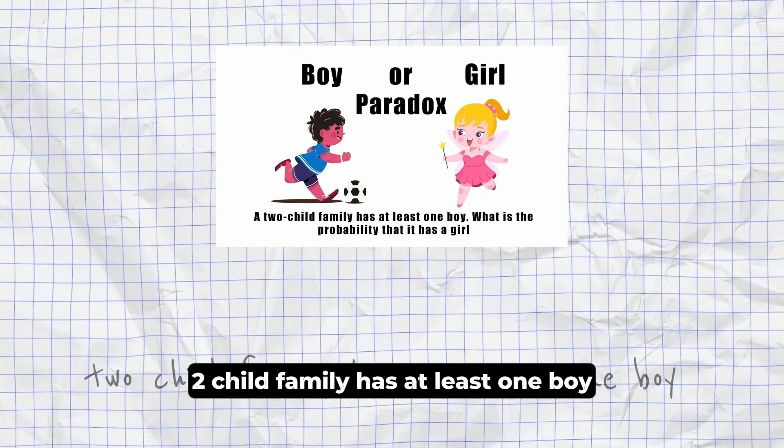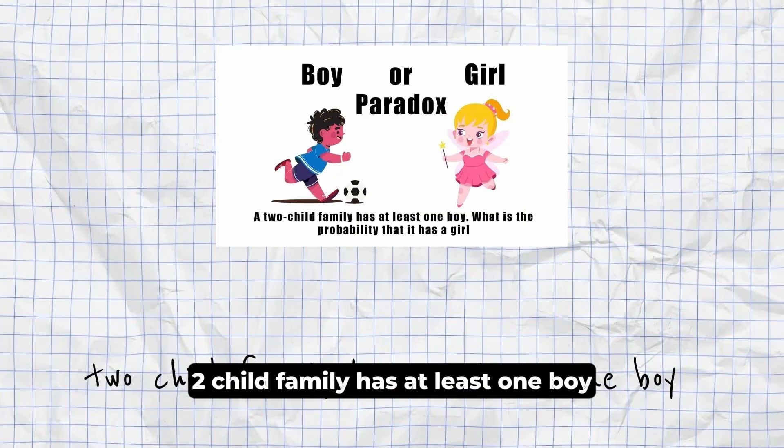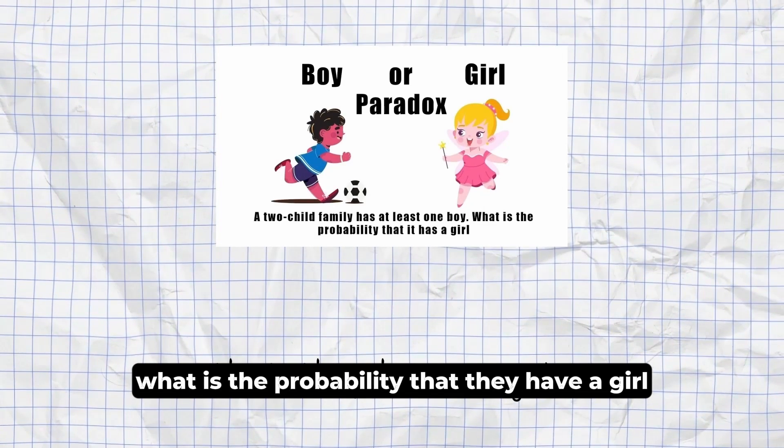The Simpson's Paradox. A trend that appears in different groups of data disappears when these groups are combined, and reverse trends appear for the aggregate data. Boy-Girl Paradox. Two child family has at least one boy. What is the probability that they have a girl?